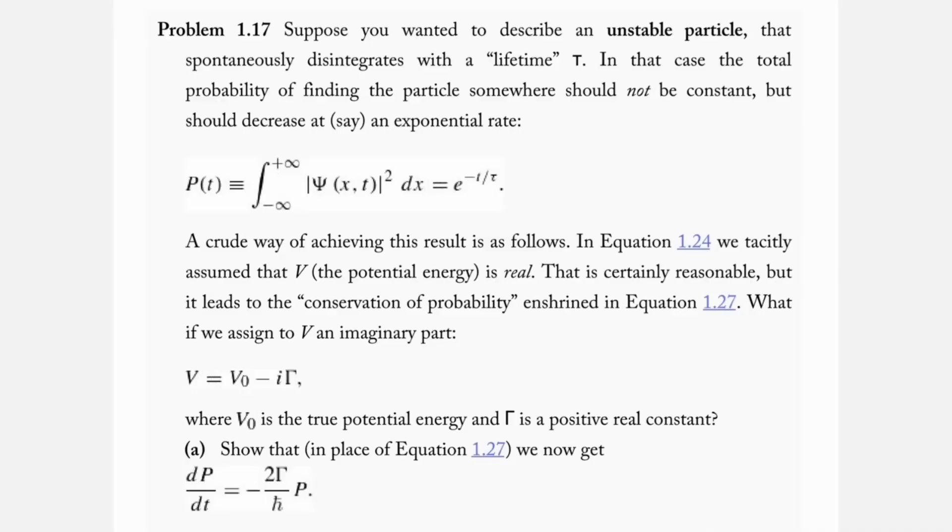In this video we're going to look at problem 1.17 from Griffith's Introduction to Quantum Mechanics 3rd Edition. In this problem we want to describe an unstable particle that spontaneously disintegrates with some lifetime, and so the probability of finding the particle is not going to be constant anymore.